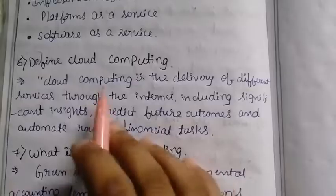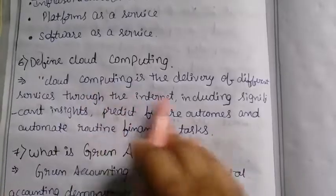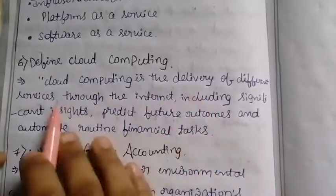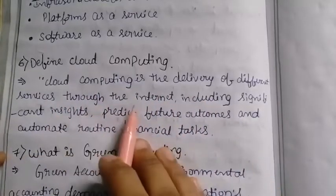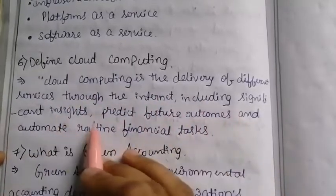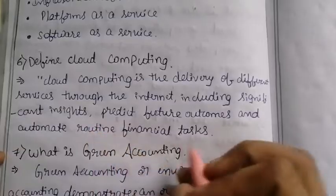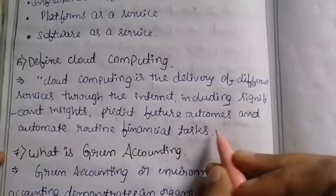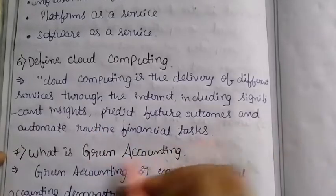Define cloud computing. Cloud computing is the delivery of different services through the internet, including significant insights, predicting future outcomes, and automating routine financial tasks.